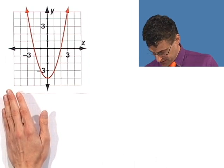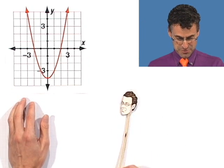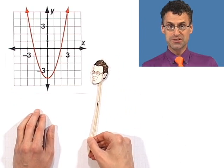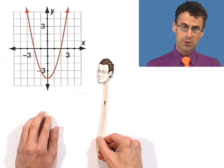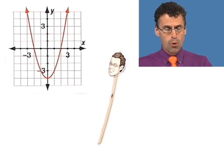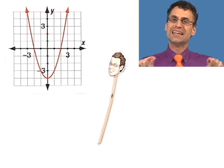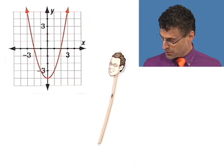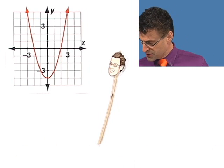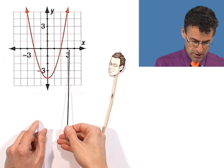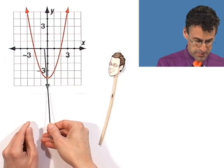Let's take a look at this nice beautiful parabola here. The question is: what are all the allowable x values in this parabola? The way you could think about that is just ask what x values are permissible.